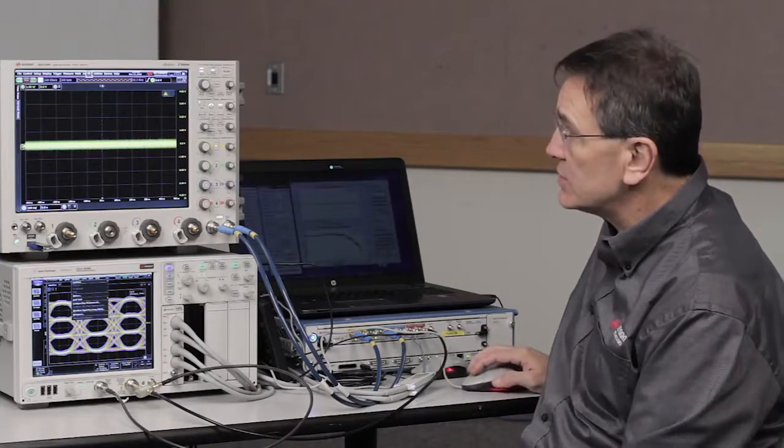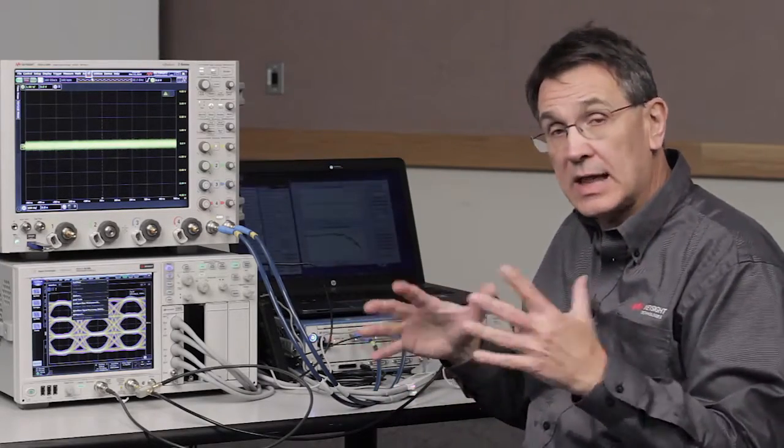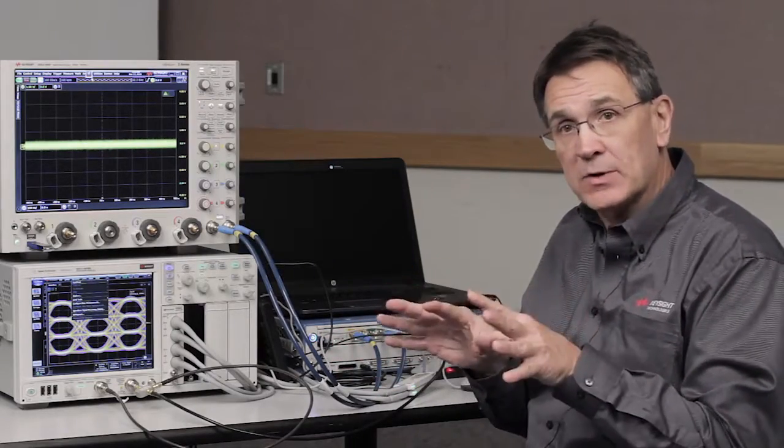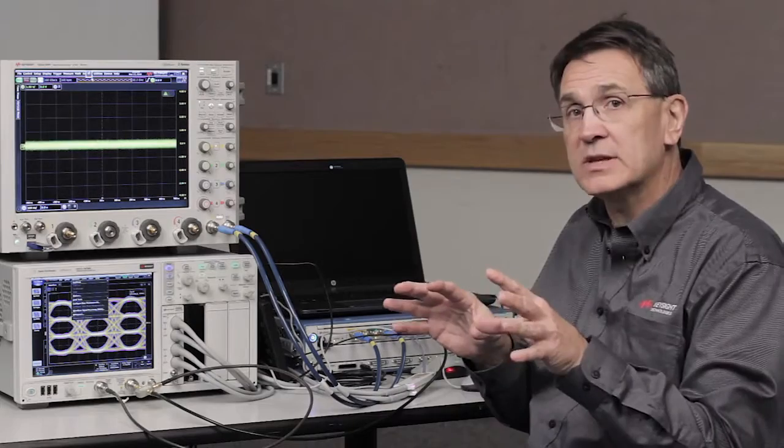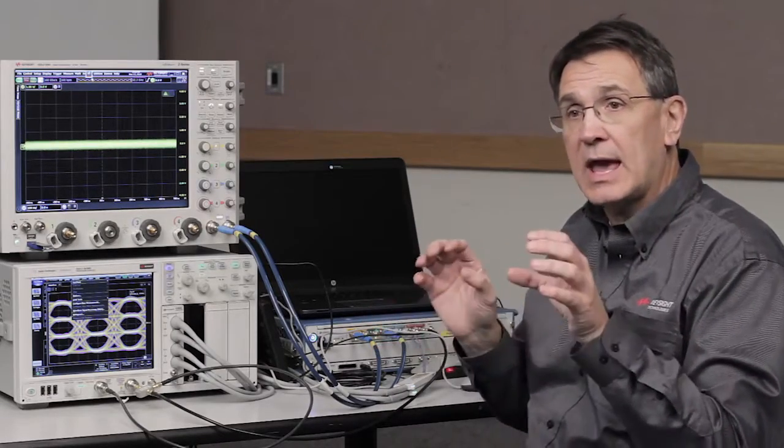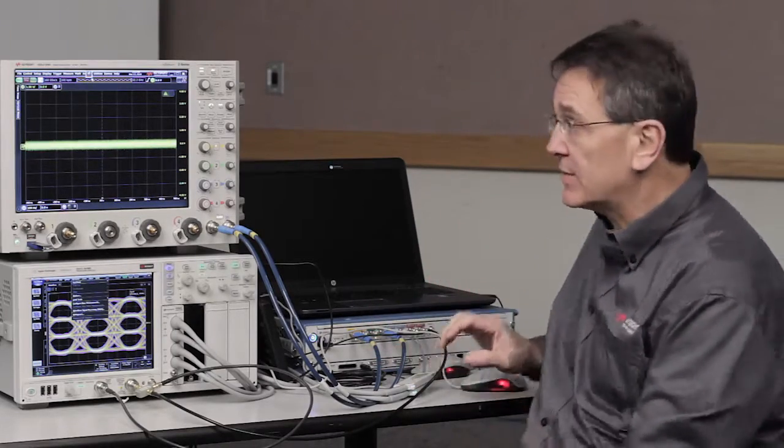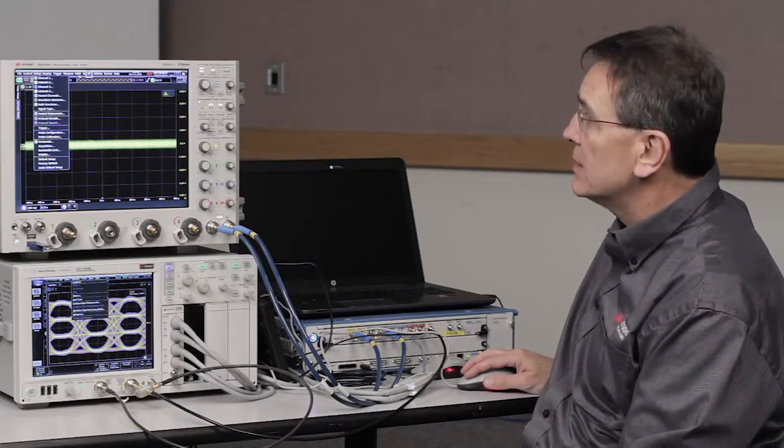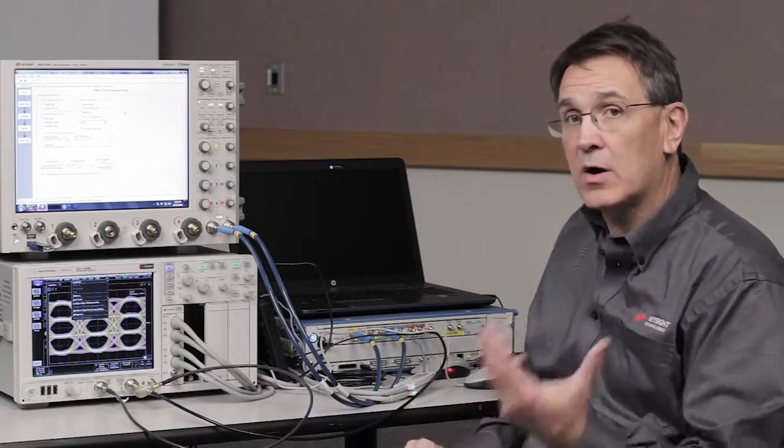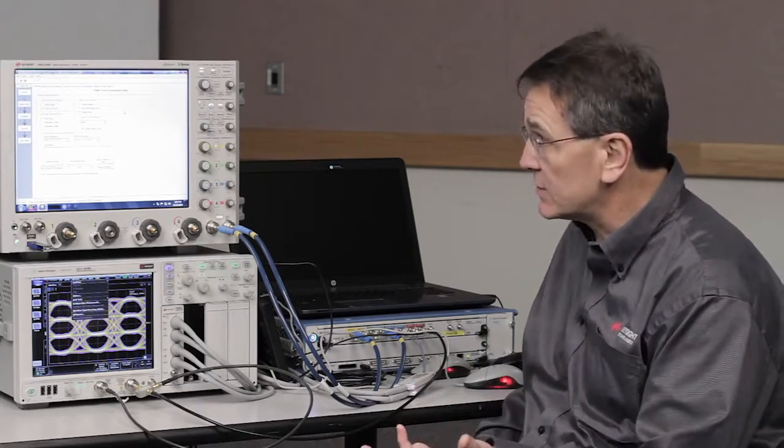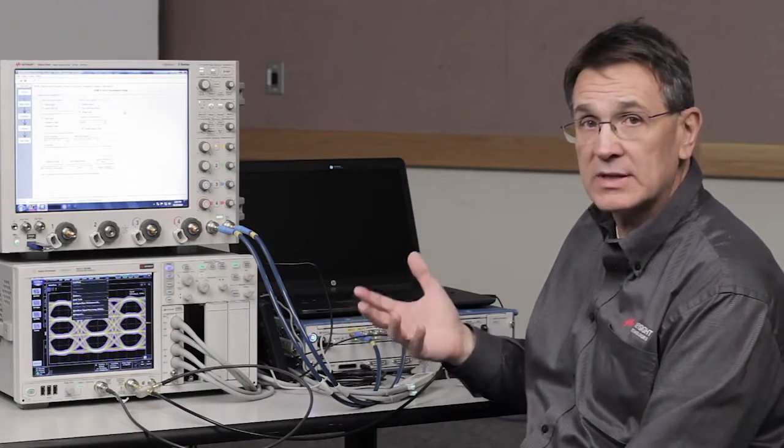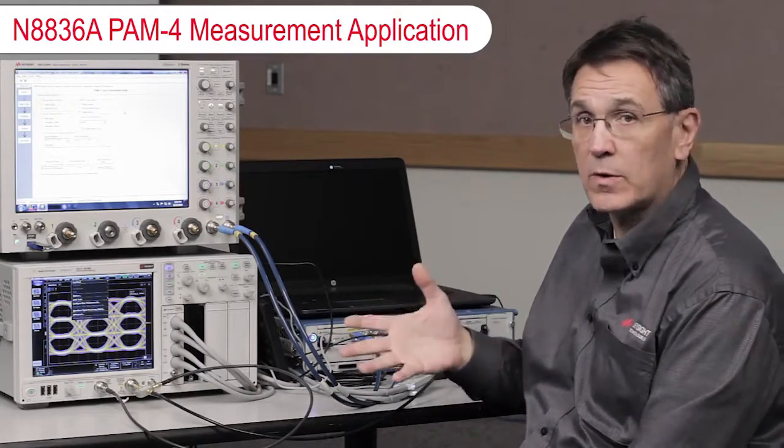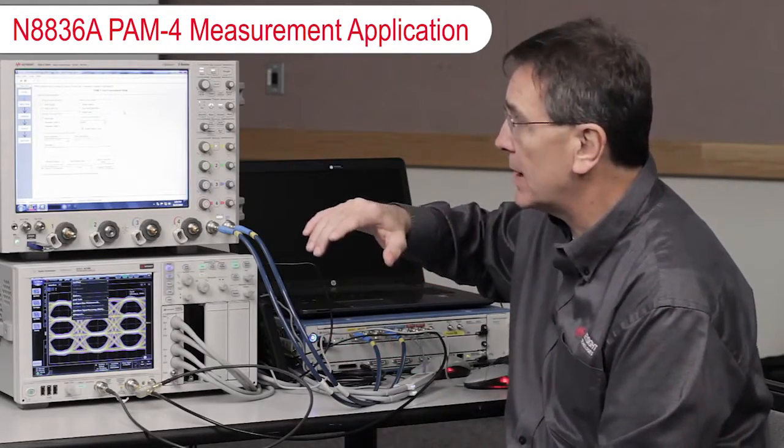So the next thing I want to do is to show you that, given that baseline collection of measurements that we have, the next thing Keysight has done is to take those and adapt those to some specific requirements that are being called out in some of the IEEE and the CEI specifications for signal technologies that utilize PAM-4. So we have this application on the real-time scope and on our DCA series of scopes. On the real-time scopes, it's referred to as the N8836A, Pulse Amplitude Modulation IV application for making PAM-4 measurements.